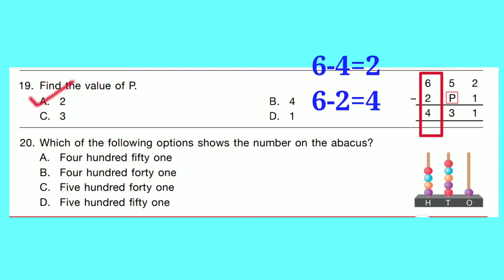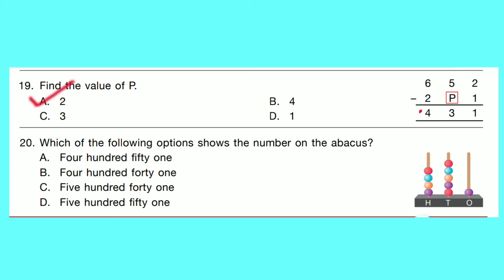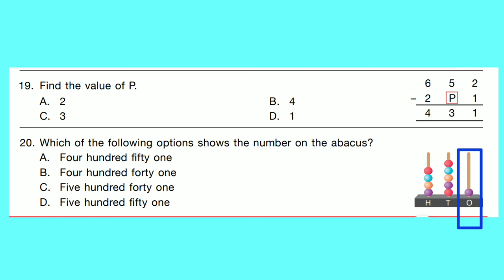Question number 20: Which of the following options shows the number on the abacus? On the abacus, 4 is in the hundreds place, 5 is in the tens place, and 1 is in the ones place. So the number is 451. Option A is correct.